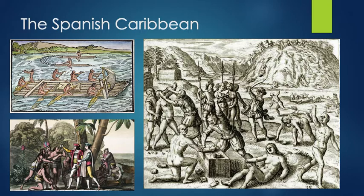A big disruption came in 1518 when smallpox reached the Caribbean islands. Smallpox then began to spread among the Taino populations, who had no immunity to this disease, and many of them ended up dying. By the 1540s, we go from a population of about 4 million people in the Caribbean to only a few thousand. Less than 50 years after Columbus, the islands of the Caribbean were severely depopulated.